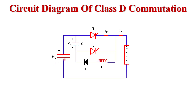Here we also use two thyristors, T1 and TA. T1 is the main thyristor and TA is the auxiliary thyristor. By using this auxiliary thyristor, we turn off the main thyristor — that is why it is called an auxiliary commutation circuit. Some other components are also used: capacitor, diode, inductor, and load. So this is the whole circuit diagram of Class D commutation.